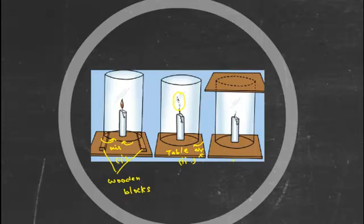And in the third figure, the chimney is rested on the table same as the second case and is covered by a glass plate. As there is no availability of air, the flame goes off.